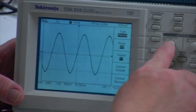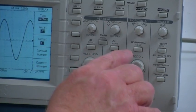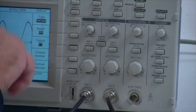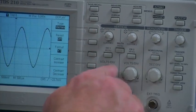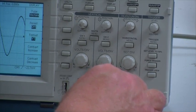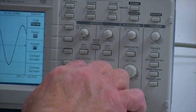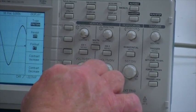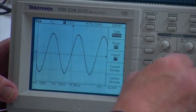These two sets of controls that are marked vertical control the y-axis of our graph here. There are actually two separate input channels. Right now we're just looking at channel one. This knob, the one that's marked volts per division, sets the scale of the y-axis.